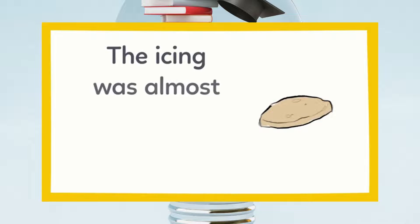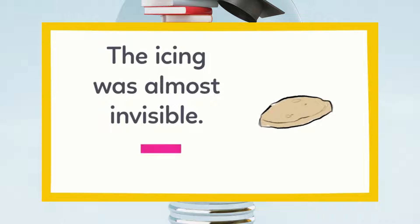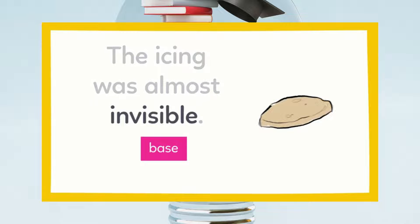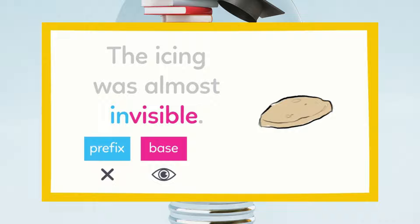That was another problem with the cookie. The icing was almost invisible. The base word in invisible is visible, which means you can see it. But the prefix in means not. So invisible means you cannot see it. The icing is our favorite part, and there wasn't enough.